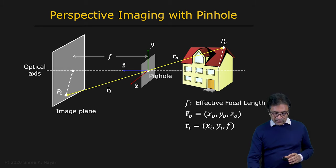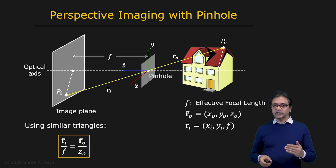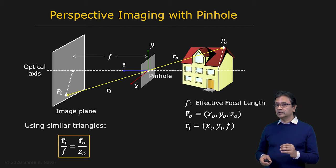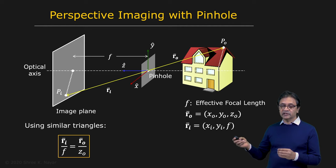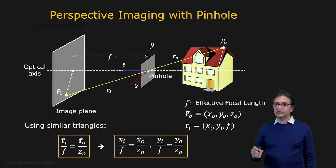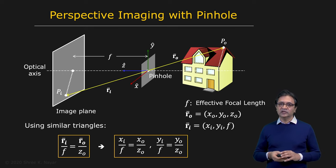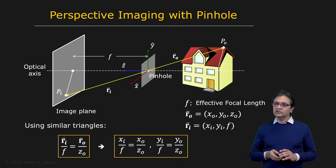If you consider two similar triangles — one in front of the pinhole and one behind it — from these similar triangles you can write: the vector RI divided by F equals the vector R0 divided by Z0, where Z0 is the Z component, i.e., the depth of the point in 3D. Breaking this into components gives XI/F = X0/Z0 and YI/F = Y0/Z0. These are the equations of perspective projection — very simple equations, but they create some fairly non-intuitive effects in images.